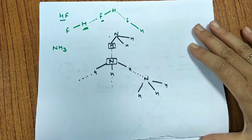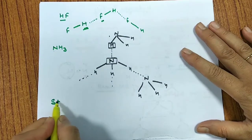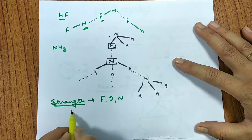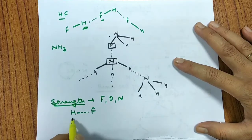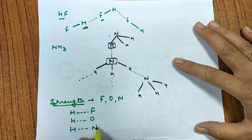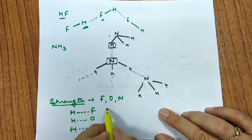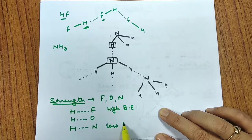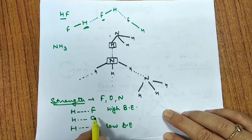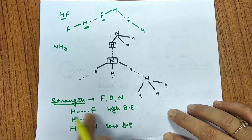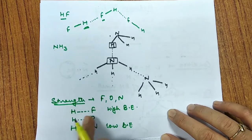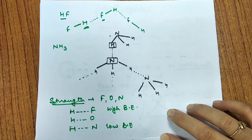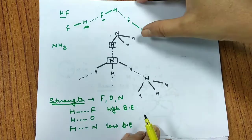Now, which Hydrogen bond is stronger? The strength can be considered in terms of electronegativity. Only 3 elements — F, O, and N — can show Hydrogen bonding. Comparing bond dissociation enthalpy: H–F hydrogen bonding has the highest bond dissociation enthalpy, followed by H–O, and then H–N has the lowest. This means the H–F hydrogen bond is comparatively stronger than the H–O bond, which is stronger than the H–N bond.